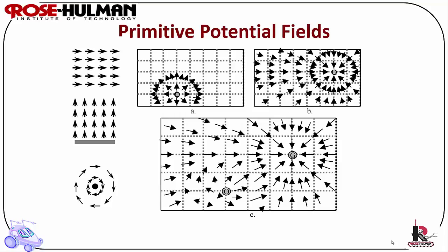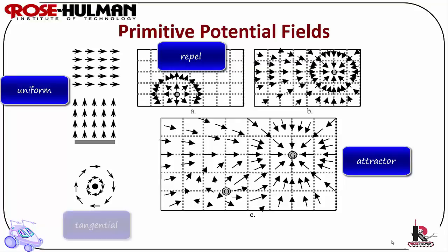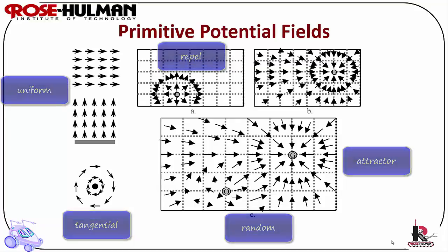Here are some examples of primitive potential fields. Uniform moves in a particular direction and would be used for wall following. Run-away would be used for obstacle avoidance, as seen on the prior slide. Attraction could be used to move to a goal or move a robot to a certain point in the world. Tangential could be used to move the robot through a door or for docking. And random could be used when a robot is in a stuck situation in order to get it out.